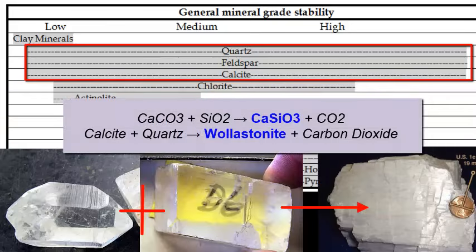For example, wollastonite — CaSiO3 — might be more stable. So the stability of a mineral depends on temperature, pressure, and chemical composition of the particles.